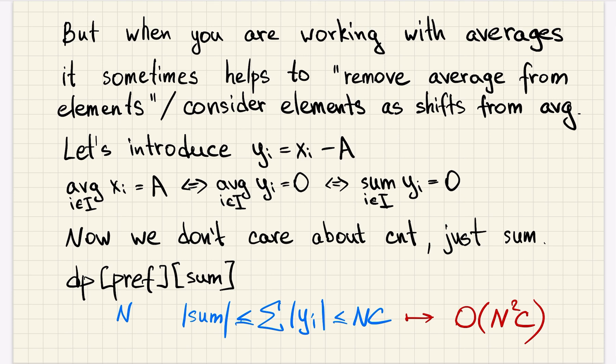And we also should consider an empty set separately, but that's easy. Just don't forget to do that. So now we don't care about the size of the set, about count. We just need to make sum equal to zero. So we can use the usual knapsack DP.